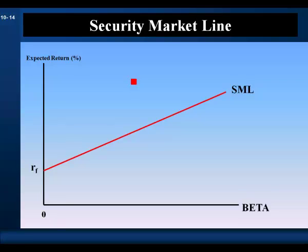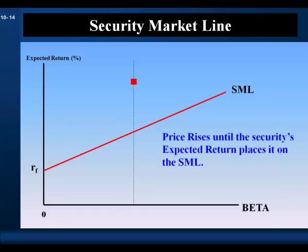Suppose a risky asset fell above the security market line. It has a higher expected return than assets of comparable risk — this asset is very valuable, it's underpriced, and it's worth more than it costs. Investors would seize this positive net present value opportunity, bidding up its price. And as its price increases, its return will fall until investors are indifferent between it and comparable investments — that is, when it's priced to fall on the security market line.